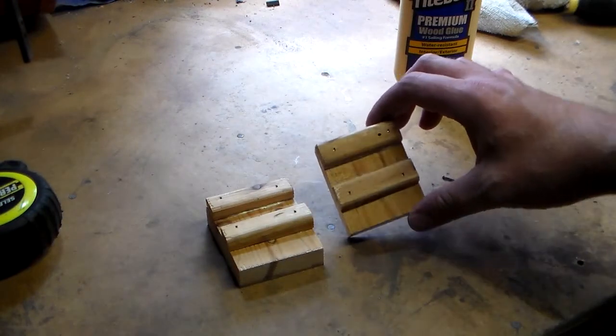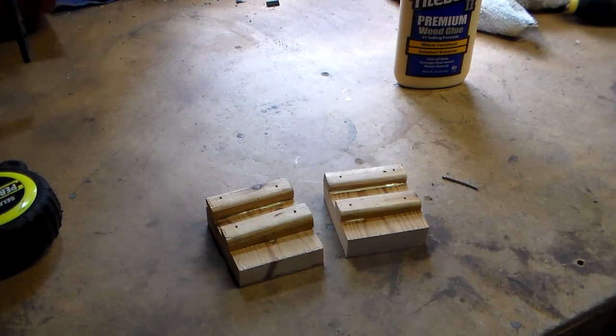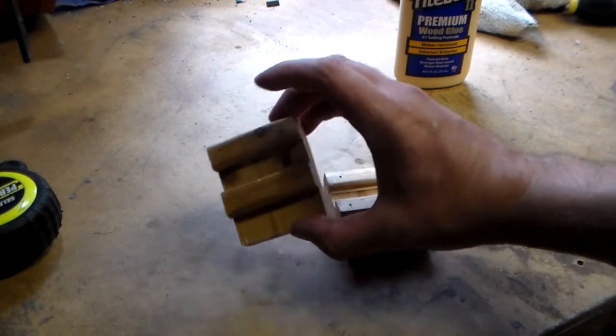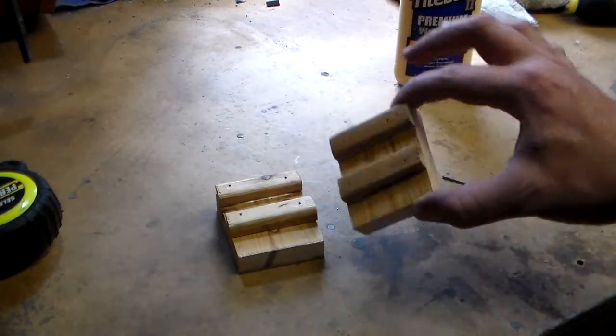Alright, as you can see, I opted to use my brad nailer for this. Just because I could clamp this and wait a couple hours for it to dry, but I'm kind of on a bit of a schedule here, so I want to get it done quick. And the brads, they're really not meant for mechanical hold, they're just meant to hold it in place until the glue dries.